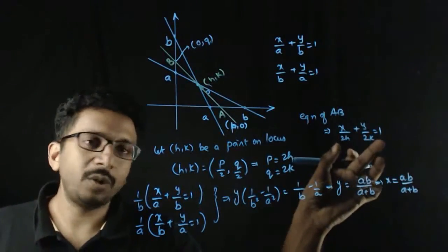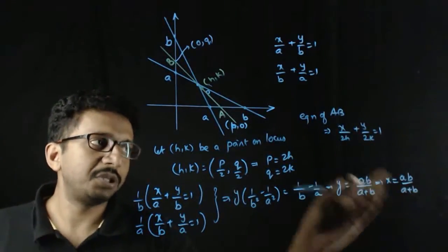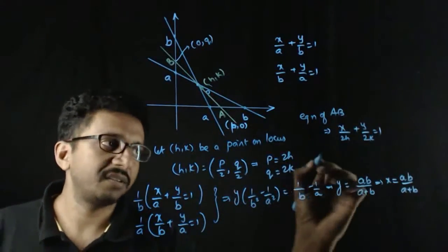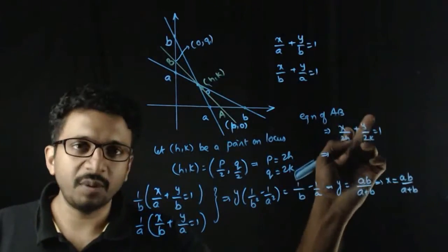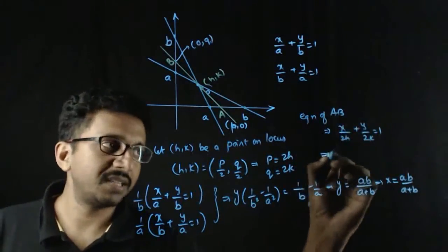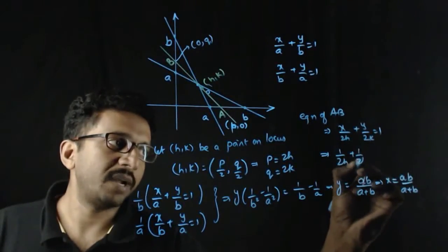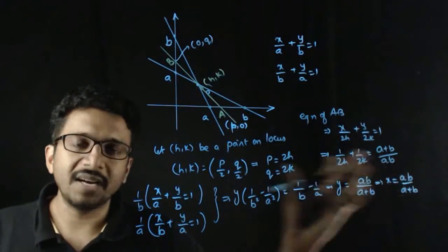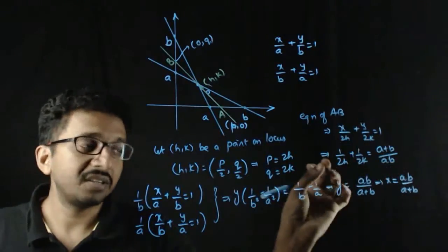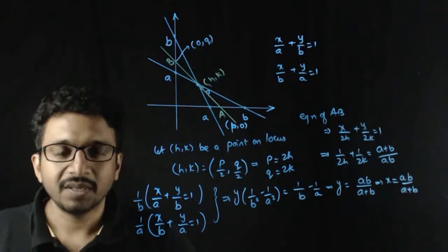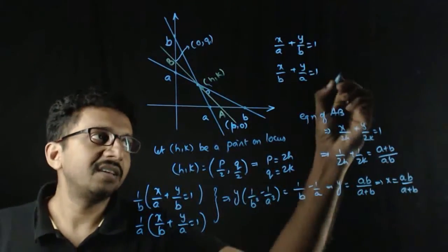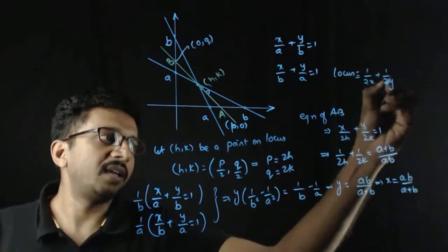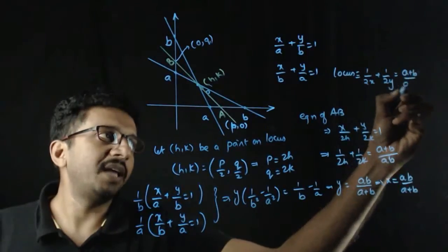The line x/2h + y/2k = 1 must pass through this point. Substituting x = ab/(a+b) and y = ab/(a+b) into the line equation, the factor ab/(a+b) moves to the other side and we get 1/2h + 1/2k = (a+b)/ab. This is the condition which h, k must satisfy. So the locus is: 1/2x + 1/2y = (a+b)/ab.